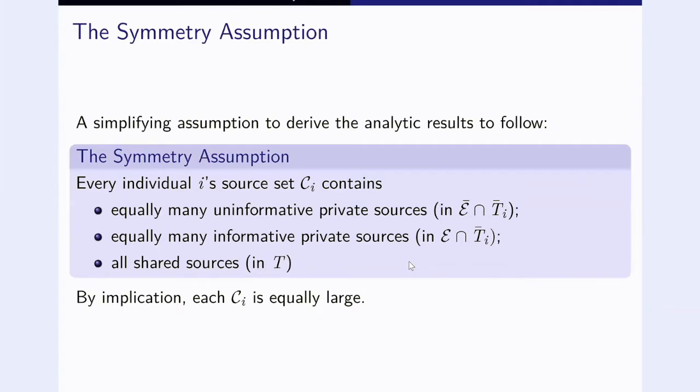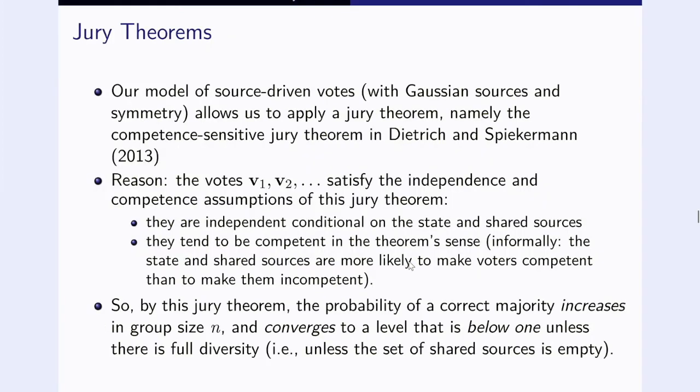Here comes the second important simplifying assumption to make some progress with analytic results. That is the symmetry assumption. A simplifying assumption to derive the analytic results would be this: every individual's i source set, curly C sub i, contains equally many uninformative private sources, equally many informative private sources, and all the shared sources in t. By implication, then, each source set would be equally large.